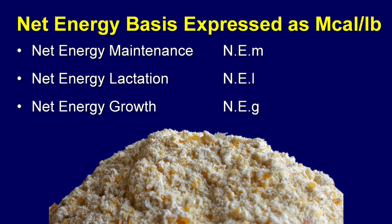The second energy system, and most common now in the U.S. and Canada, is the net energy system. Net energy is what's available after we remove all the losses. You will find three different terms listed for each feedstock: net energy maintenance, which is the energy content if the cow uses it just to stay alive; net energy lactation, or NEL (where the L is small), meaning the energy used to produce milk; and net energy gain, meaning energy used for gain or growth on the animal.